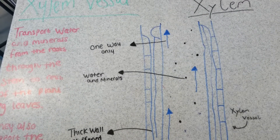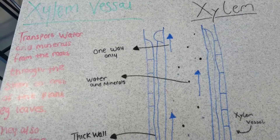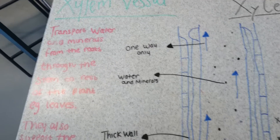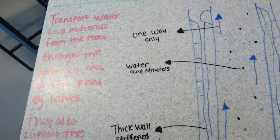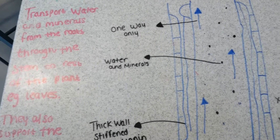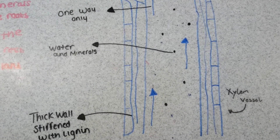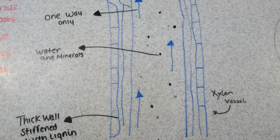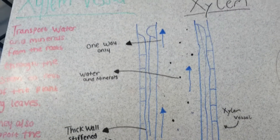I'm going to tell you about the xylem vessels. Xylem vessels transport water and minerals from the roots throughout the stem to the rest of the plant, for example the leaves. They also support the plant.